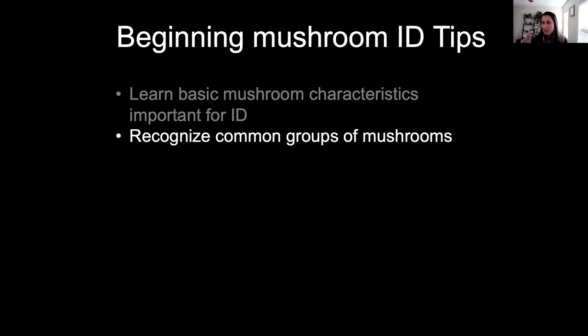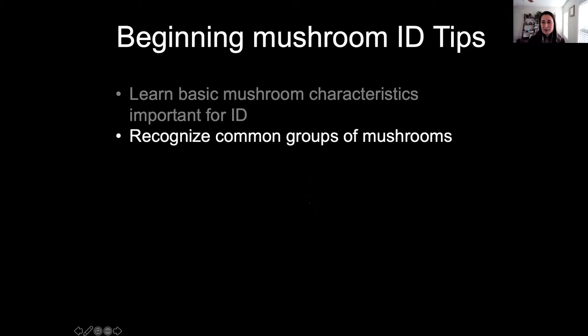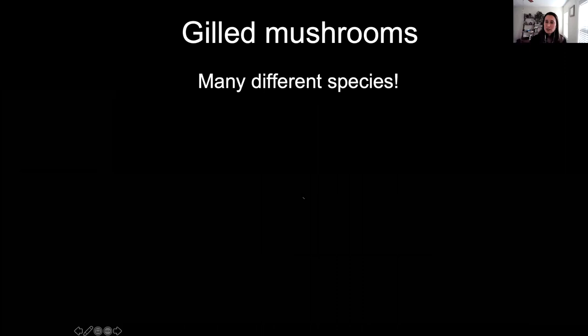So that's tip one: learn the basic mushroom characteristics important for ID. Tip two is to learn to recognize common groups of mushrooms. This helps you narrow things down and know which key characteristics to use for each group. Here are some mushrooms you could easily encounter in our woods — let's start with gilled mushrooms, of which there are many, many different species.